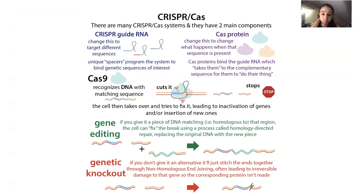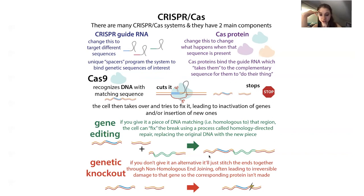There are also different types of CRISPR-Cas systems — some can be more precise, and there are many variations nowadays. CRISPR can also be used for gene editing in cells to introduce specific mutations or switch versions of a gene. If you put in different DNA, the cell can use homology-directed repair to cut out one region and put in a new one, influencing things at the level of the DNA.